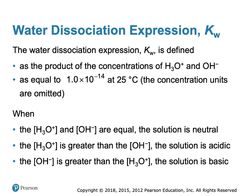When writing an equilibrium expression, concentration units are omitted. We use the dissociation into H₃O⁺ and OH⁻ to define when a solution is acidic, basic, or neutral. When the concentration of H₃O⁺ and hydroxide are equal, you have a neutral solution. If you have more H₃O⁺ than hydroxide, your solution is acidic. And if you have more hydroxide than hydronium, the solution is basic.